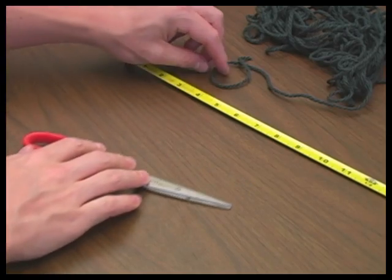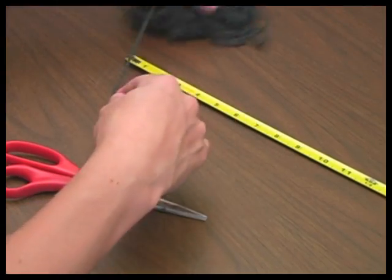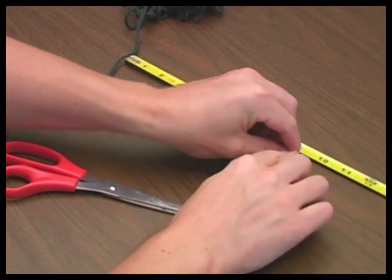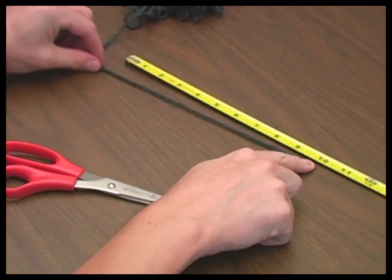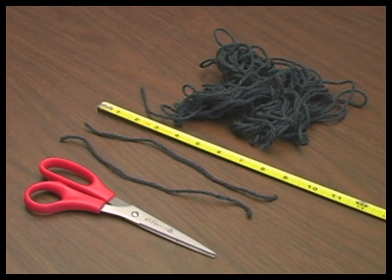Take the string or yarn and measure 10 inches in length using the ruler or tape measure. Cut the string. Repeat these steps. There should now be two pieces of string or yarn, each 10 inches in length.